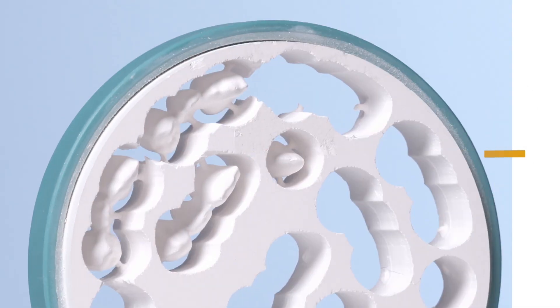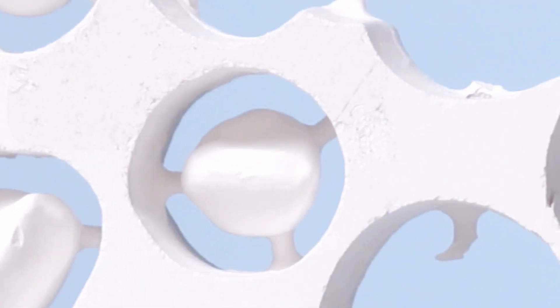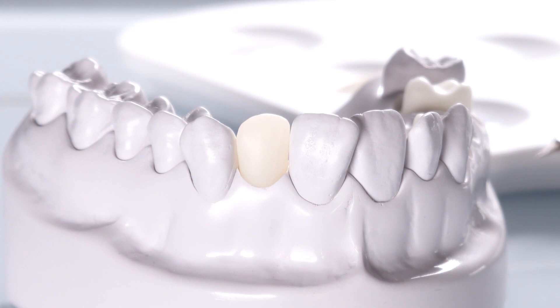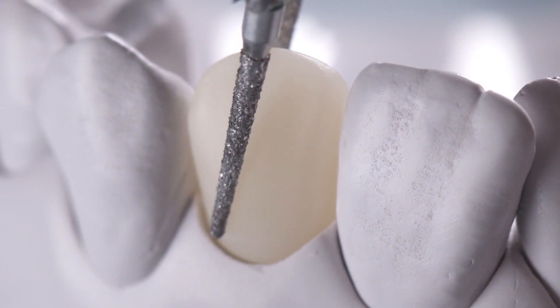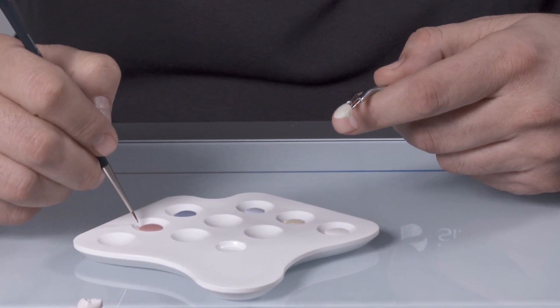The extra-translucent Circon XT Zirconia material provides a high level of aesthetics with monolithic restorations. All that is required is a final customization with universal stains and glaze.